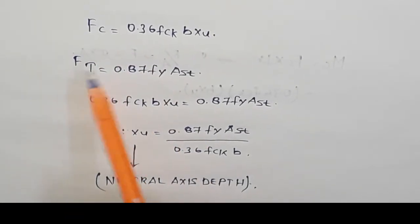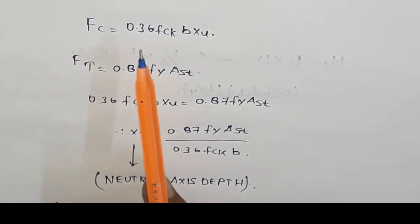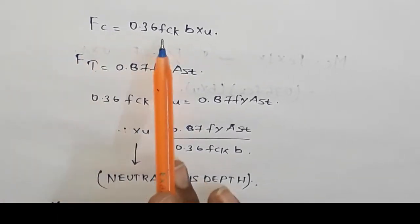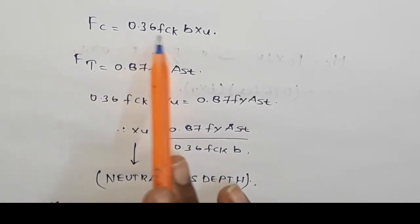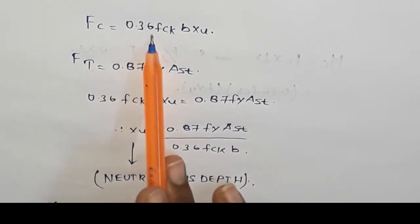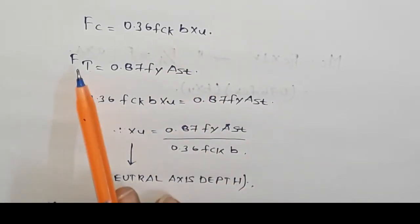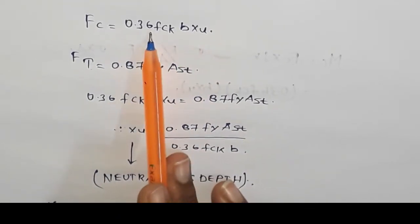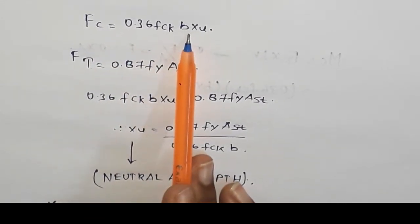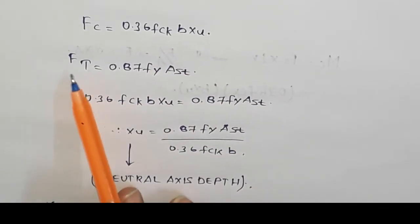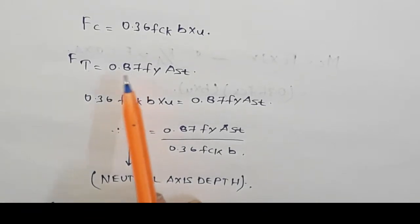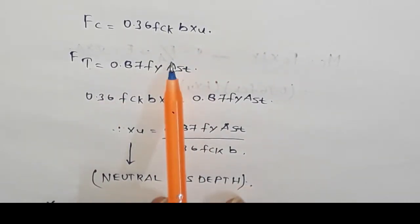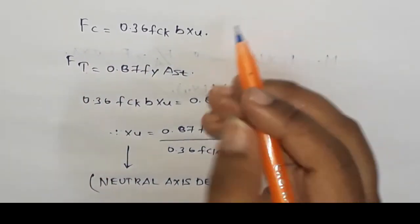Now coming to the calculation of neutral axis depth. We have seen the maximum values of stress and strain in both concrete and steel. The compressive force in the compression zone is 0.36 FCK, and its area is B × XU. Force equals stress into area, so the compressive force equals 0.36 FCK × B × XU. In the tension zone, the stress in steel is 0.87 FY and its area is AST, giving tensile force FT equals 0.87 FY × AST. To calculate the neutral axis depth, I equate both equations 1 and 2.